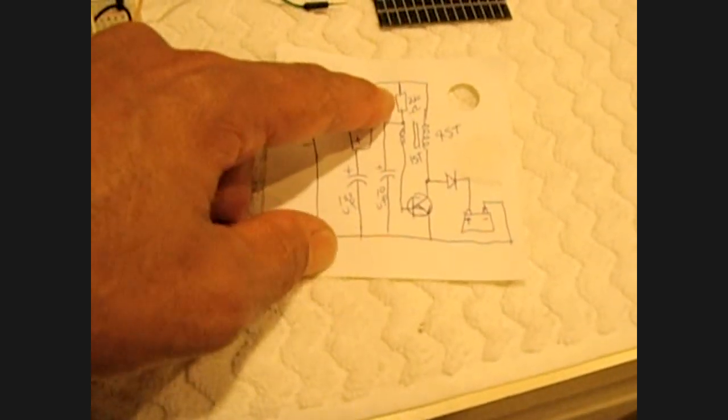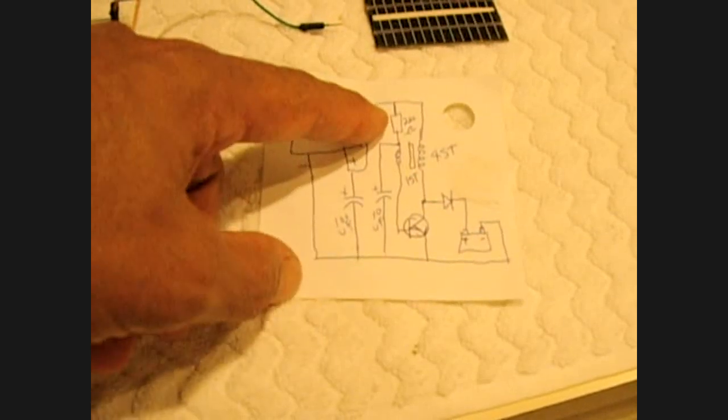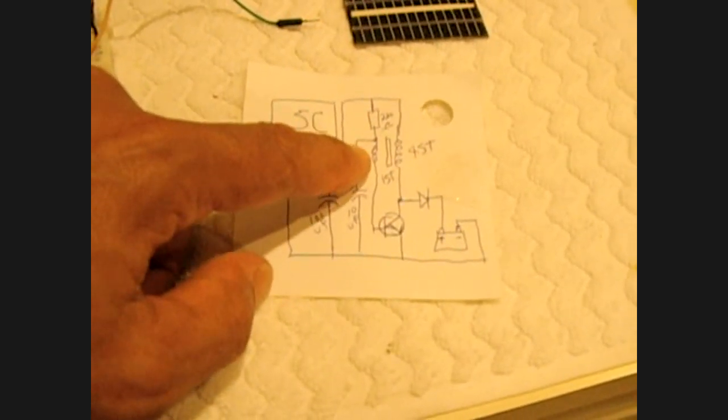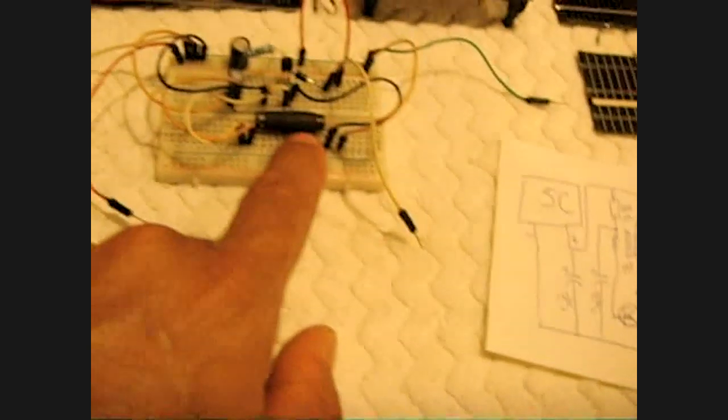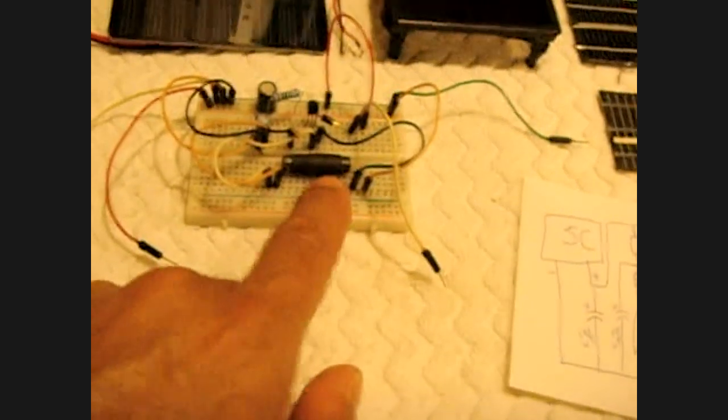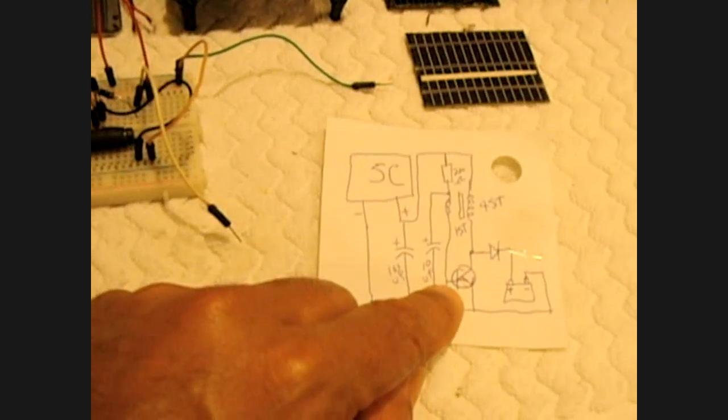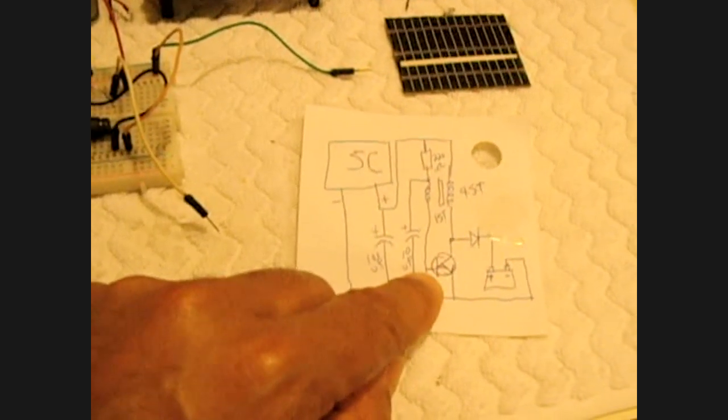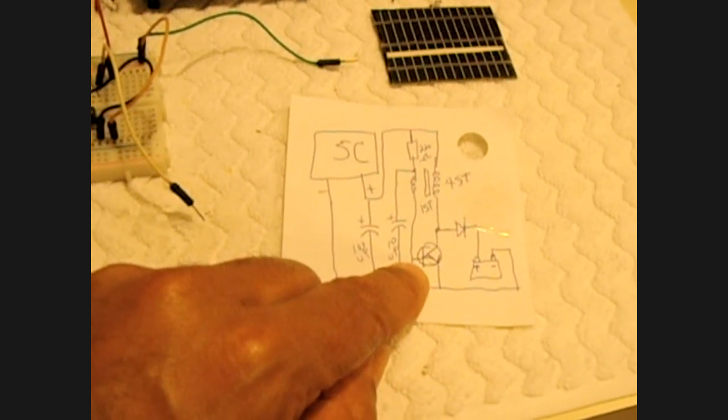That feeds into a 15 turn winding around a 5 millimeter ferrite core, and then it goes into the base of an NPN transistor. I use a D965. It's the same ones that you will find in a Fuji flash circuit.